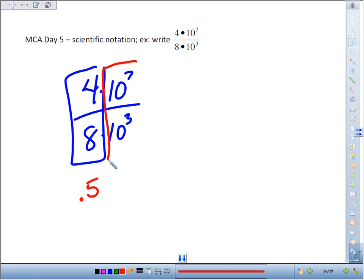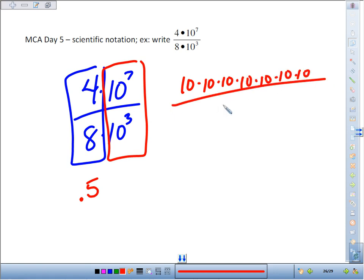Now worry about your exponents. 10 to the 7th divided by 10 cubed. Think about it. 10 to the 7th literally means 7 factors of 10 on top. There's 5, 6, 7 factors of 10. And on the bottom, you've got 3 factors of 10. Well, 1, 2, 3 of them will cancel, leaving 1, 2, 3, 4. Of course, the shortcut 7 minus 3 gives you times 10 to the 4th.